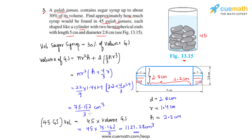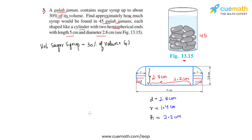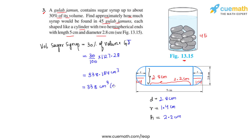Our next part is to find how much syrup is in these 45 gulab jamuns. As already established, the total volume of sugar syrup is 30% of the volume of 45 gulab jamuns. So we calculate 30/100 × 1127.28, which gives us 338.184 cm³, which on approximation gives us the answer as 338 cm³ — the volume of sugar syrup found in the jar filled with 45 gulab jamuns.